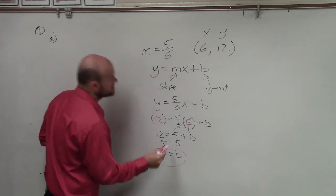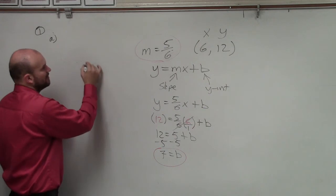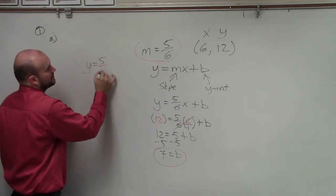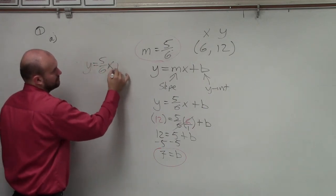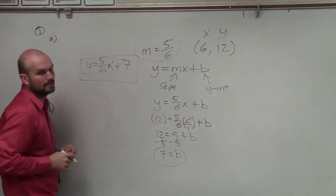Now I know what b is, and I know what m is. So to write my equation in slope-intercept form, I just plug in those values. That's it.